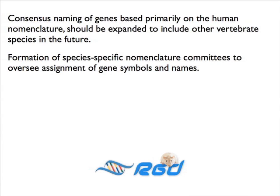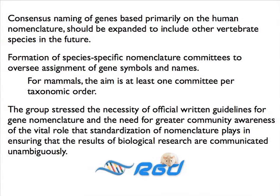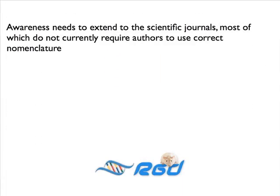The group encouraged the formation of species-specific nomenclature committees to oversee the assignment of gene symbols and names. For mammals, the aim is at least one committee per taxonomic order. The group stressed the necessity of official written guidelines for gene nomenclature and the need for greater community awareness of the vital role that standardization of nomenclature plays in ensuring that the results of biological research are communicated unambiguously. Such awareness needs to extend to the scientific journals, most of which do not currently require authors to use correct nomenclature.